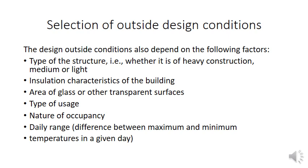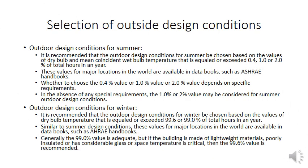Outside design conditions depend on: type of structure (heavy, medium, or light construction — single wall, double wall, or wall with space between); insulation characteristics of the building including walls and glazing area; the type of transparent surfaces (thickness and opacity of glass); nature of occupancy (hospital, movie theater, shopping mall, residential, or office building); and daily temperature range — the difference between maximum and minimum temperature in a given day.